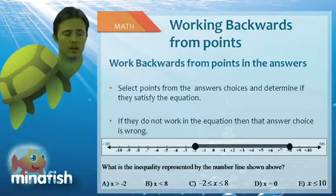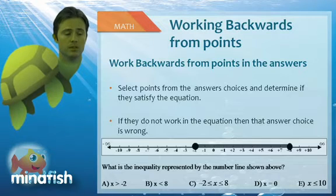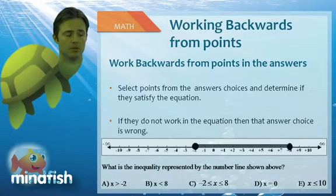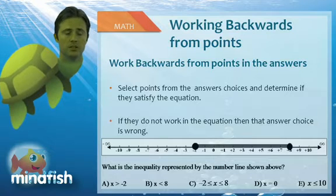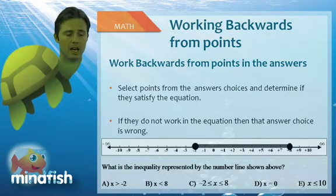Now let's take another number like negative 2. Negative 2 is true in our number line, but negative 2 is not true for A. It's true for B, it's true for C, and it's true for E. So now we've eliminated A and D.